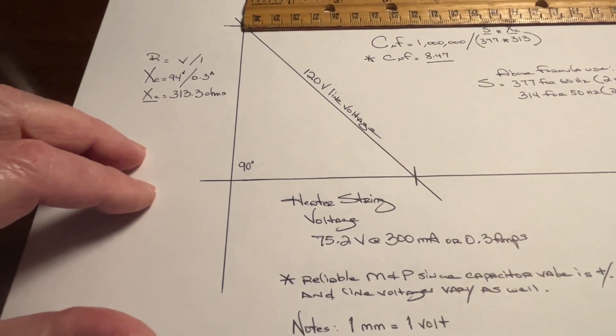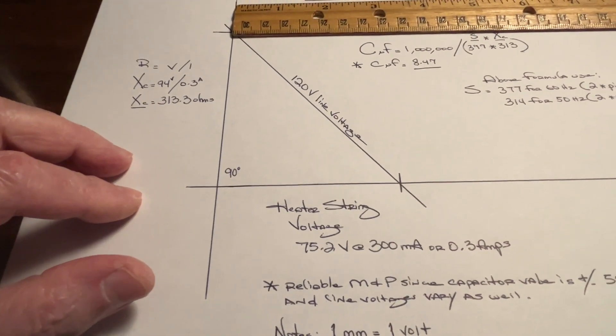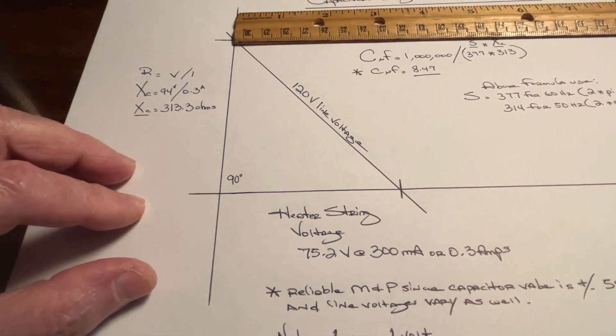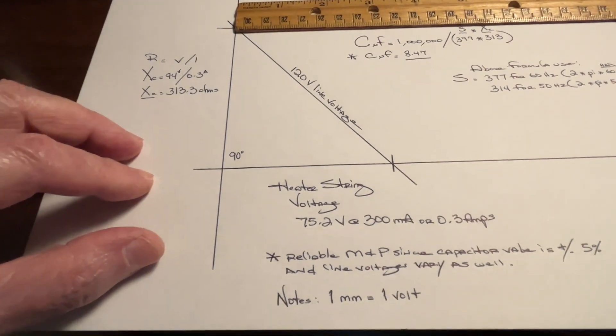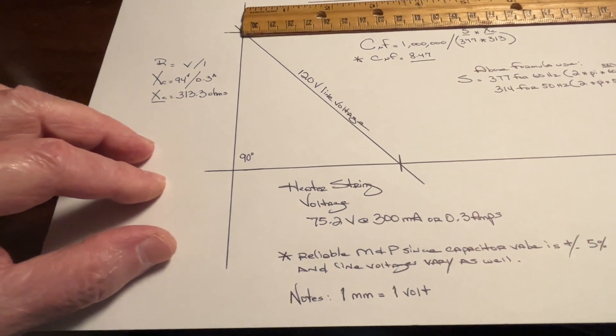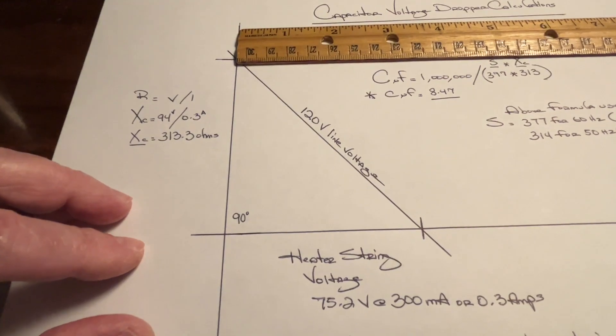That use a resistive line cord and/or a ballast tube in the case of the receiver that I'm working on right now. So let's get started.